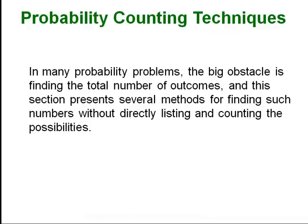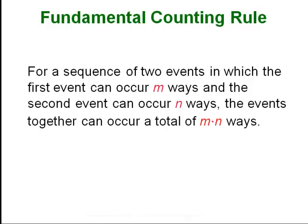I know it sounds silly that we are going to learn how to count all over again, but we pretty much are. The first fundamental counting rule is that if you are doing a sequence of events and the first one can happen so many ways and the second one can happen so many other ways, then the total number of ways it can all happen is just m times n. We will see this with a tree diagram a little bit later.